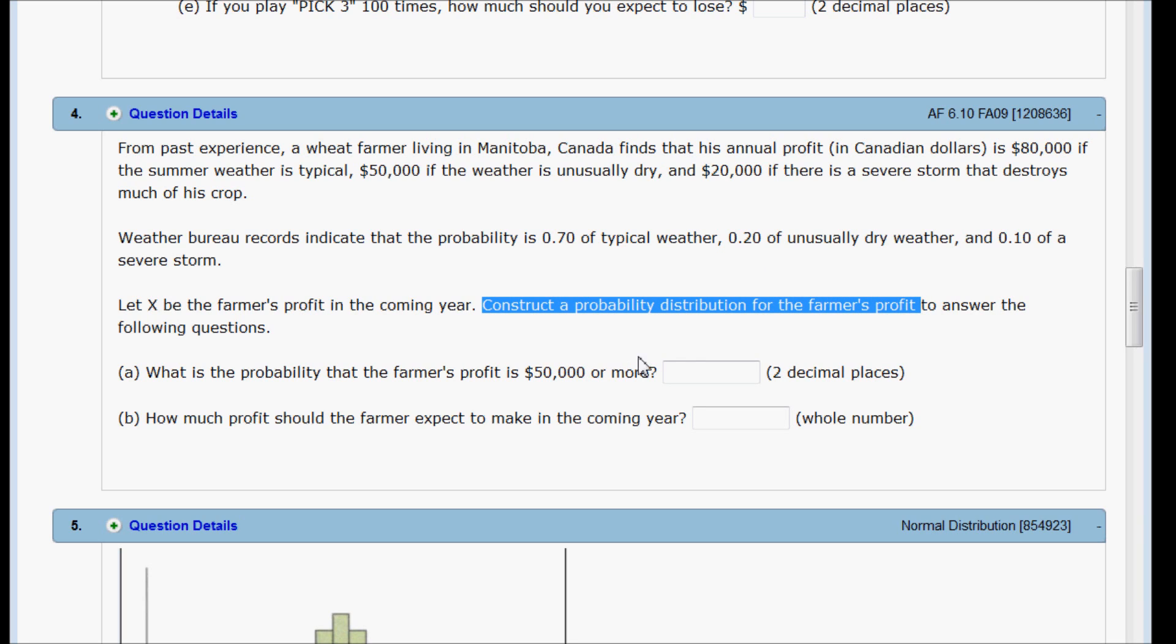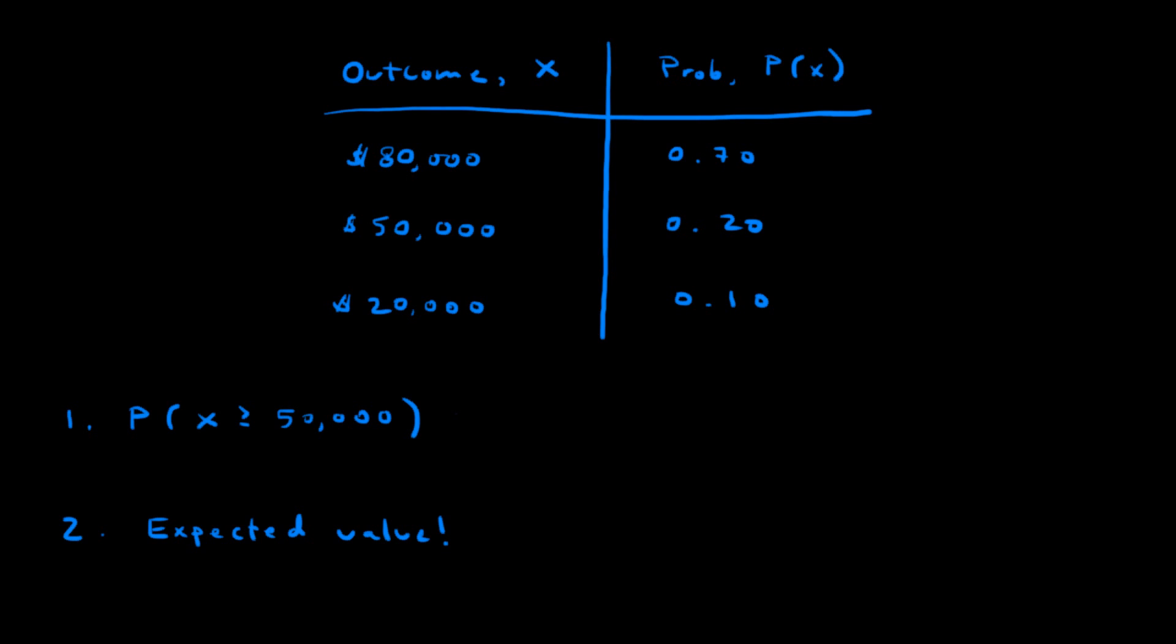You can make this probability distribution by combining information from the first two sentences. The probability distribution will look like this: the three possible outcomes and the probability of each outcome. That's your probability distribution.